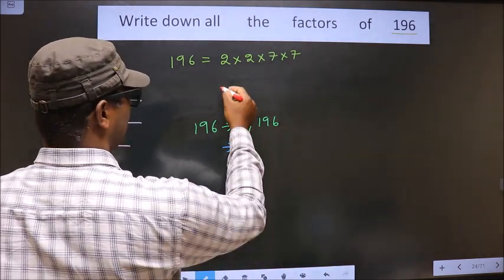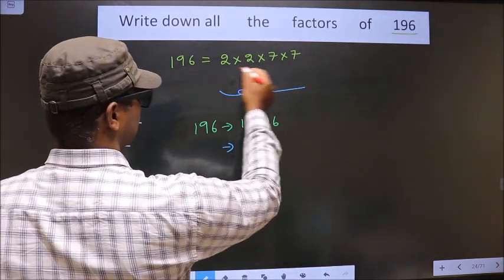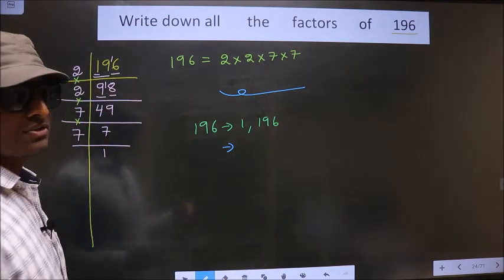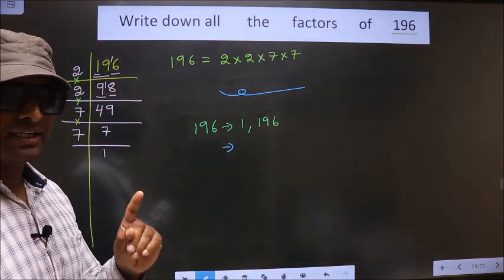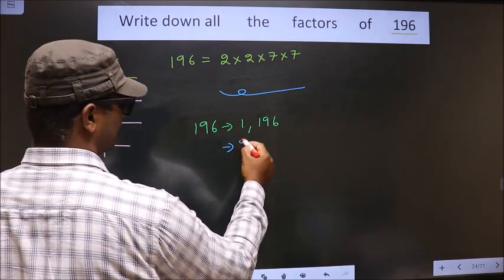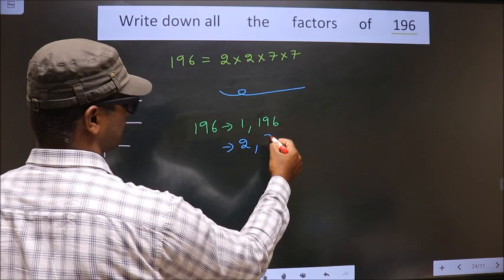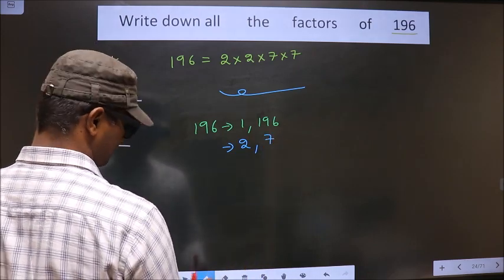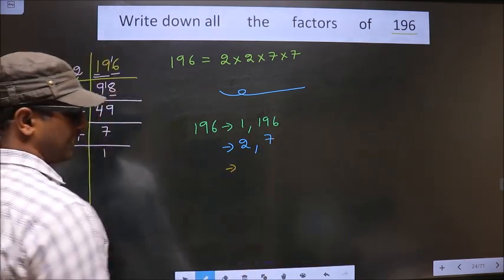Now from these numbers, now you select one different number at a time. So we get 2 and 7. That's it. Next.